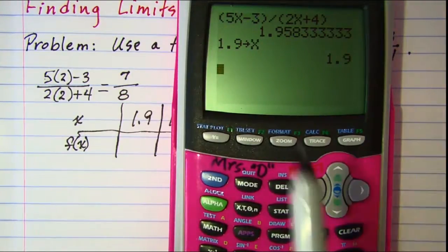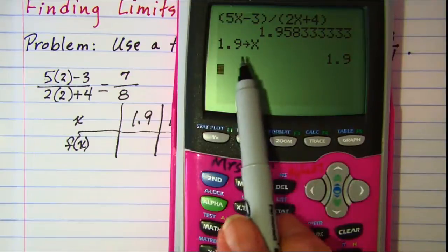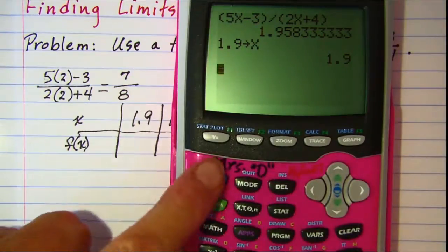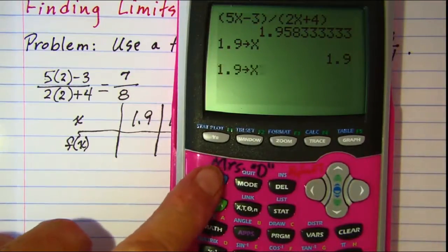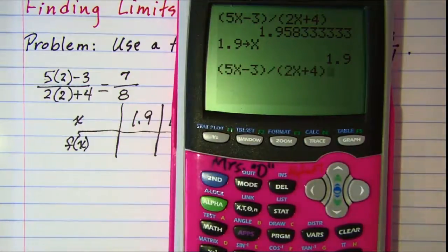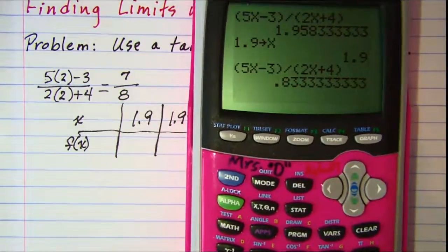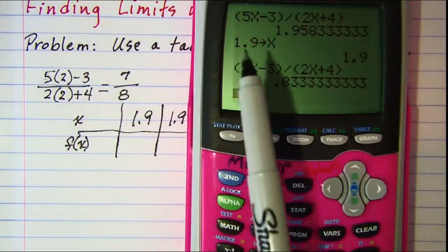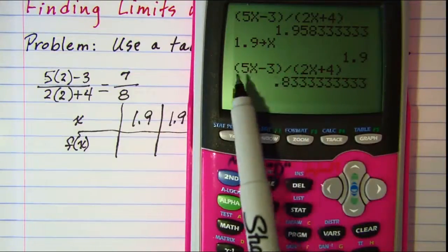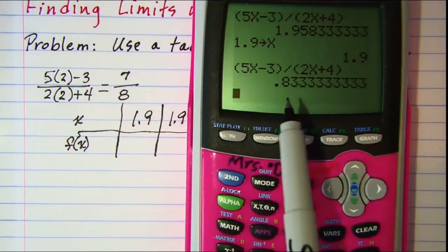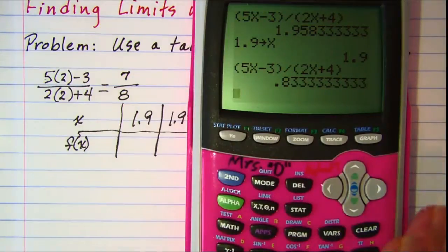Now 1.9 is stored into that memory for x and if I do 2nd enter, 2nd enter, I get my expression back. Now when I press enter I'll get the value for this expression when 1.9 is substituted in for x. So I see that it's 0.8333.